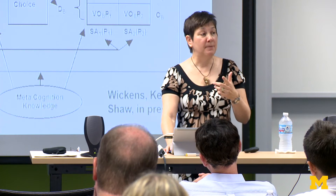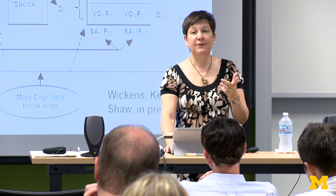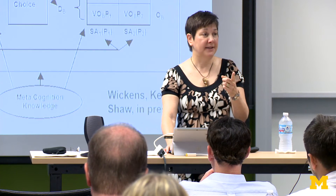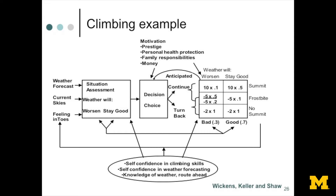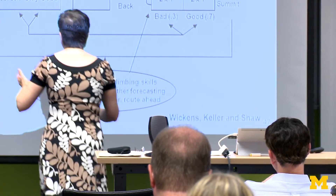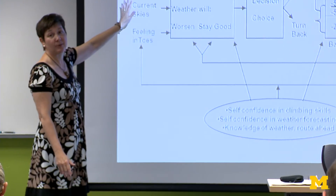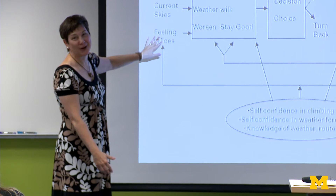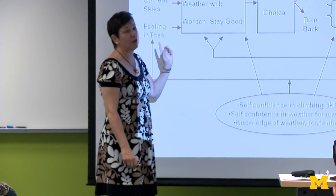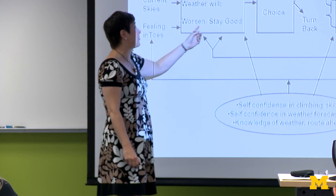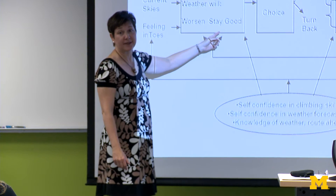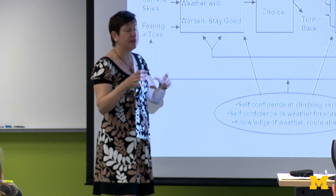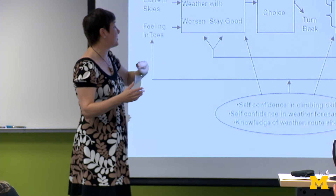The outcome depends on the actual state of the world. If the state is a hostile threat, there will be one outcome; if it's not hostile, another. For example, imagine you're a mountain climber up on the mountain in the middle of the day. You have cues: the weather forecast, the current skies, and some feeling in your toes. You're assessing whether the weather is going to get worse or stay as good as it currently is.